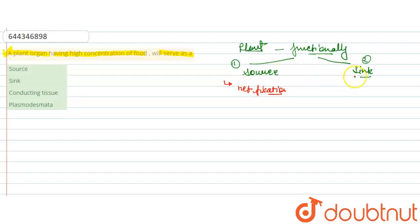Then it transports into the sink. The net fixation of carbon, because the food material is present in the plant in carbon form. So that means the food is present here in high concentration.